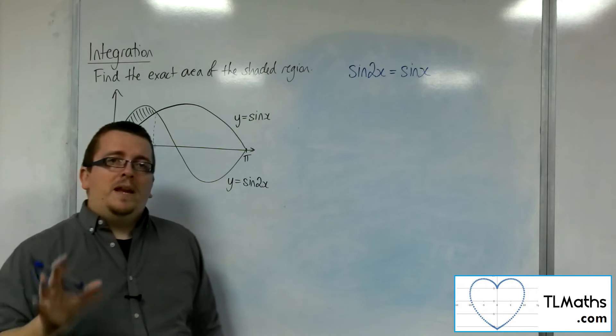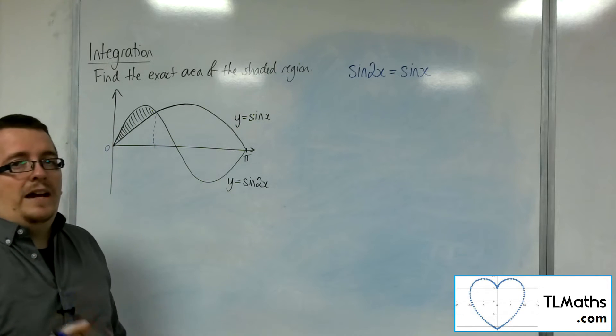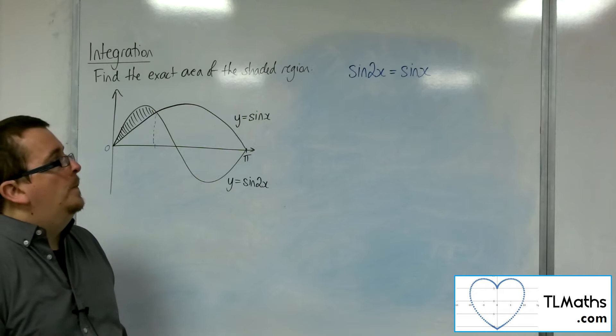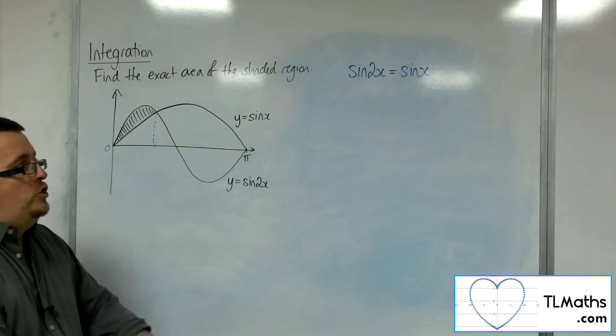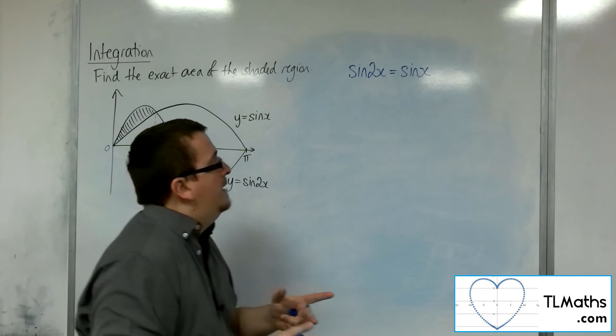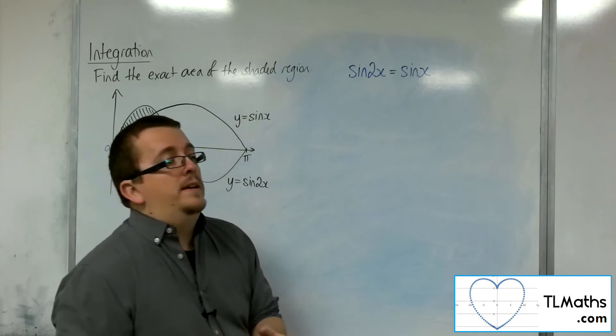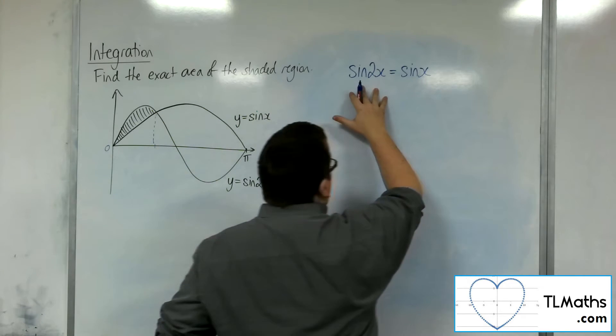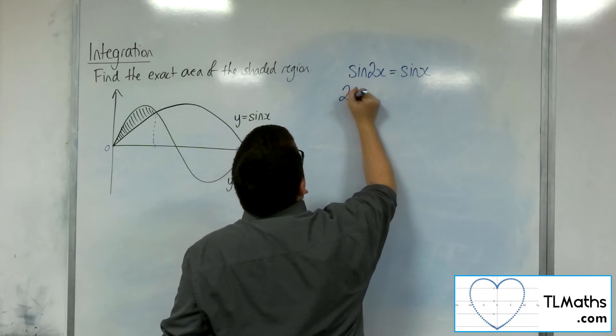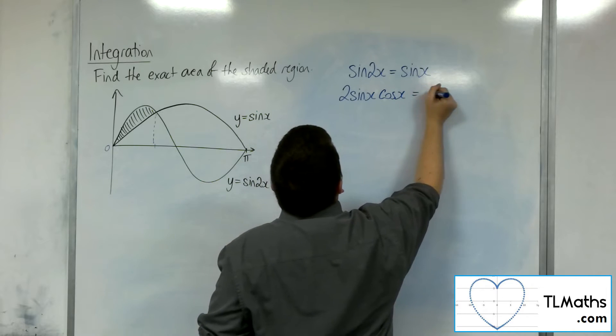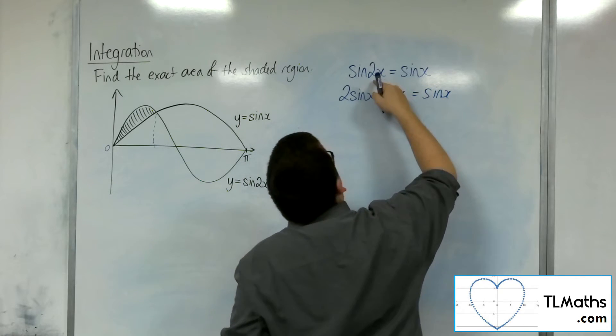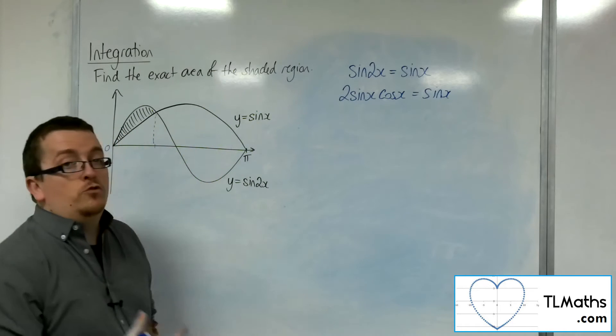Now it may not be immediately obvious as to how you could go about doing this. However, if you have met the trigonometry chapter and you've gone all the way through that and you've gone through the double angle formulae, you should know that sine 2x is equivalent to 2 sine x cos x. That is a double angle formula that we need to remember.